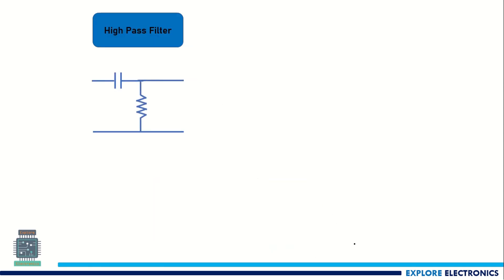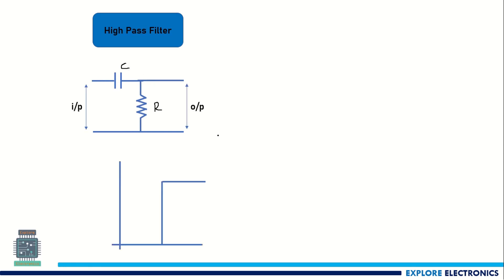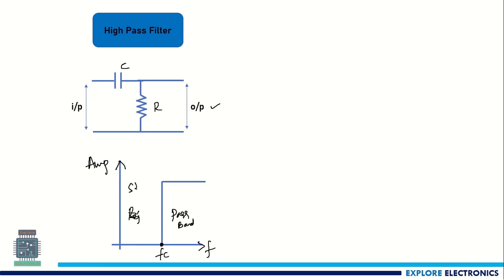Similarly, for the high-pass filter, it is a capacitor and resistor connected in this fashion. By applying the input, we measure the output across the resistor. The frequency response of the high-pass filter shows that once the frequency reaches the cutoff frequency, all signals above it are passed, while low-frequency signals are rejected. The region above Fc is called the pass band, and the region from 0 to Fc is called the stop band.